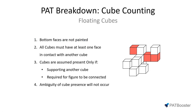Rule number two states that all cubes must have at least one face in contact with another cube. This rule hasn't been violated either, since all floating cubes have at least one of their faces in contact with another cube. This red cube has one cube in contact with it, this one has two cubes in contact with it, and this floating cube also has two cubes in contact with it. So this rule is fine — it hasn't been violated.